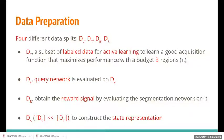For this approach to work, data is split into four different parts. The first is D_T, a subset of labeled data used for active learning to learn an optimum policy. The second is D_V, used for evaluating the query network. D_R is used to obtain the reward signal by evaluating the segmentation network on it. And finally D_S is used to construct the state representations, which will be explained in the following slides.